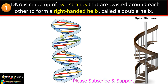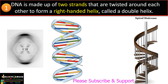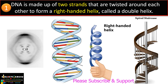Watson and Crick got the idea of the double-stranded structure from the X-ray crystallographic data of Rosalind Franklin of Maurice Wilkins' lab. From this image, they deduced that DNA has a double helical structure.